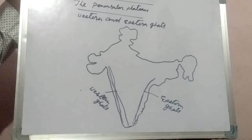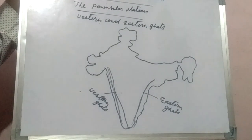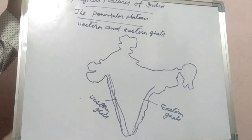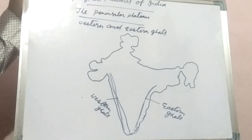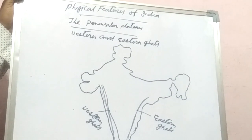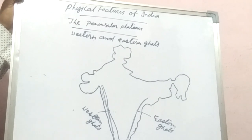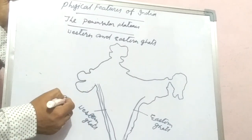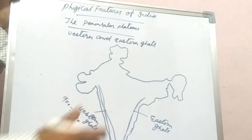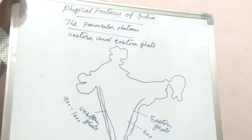Mountain passes are the natural ways that allow you to move across from one place to another in a hilly region. You have to locate all these regions in the map of India, like the various ghats such as Pal Ghats, Bhor Ghats, and Thal Ghats. The Western Ghats are higher than the Eastern Ghats — their average elevation is 900 to 1600 meters, whereas the Eastern Ghats' height is only 600 meters.